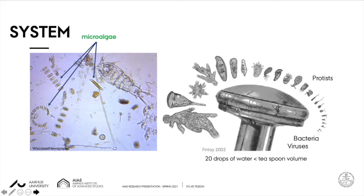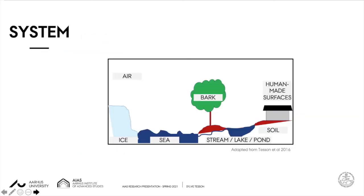Microalgae are unicellular prokaryotic or eukaryotic organisms able to perform photosynthesis, so they can provide oxygen and food source for local communities. Microalgae are present in many habitats in the aquatic and terrestrial ecosystems. They are, for example, present in ice, sea, stream, lake,